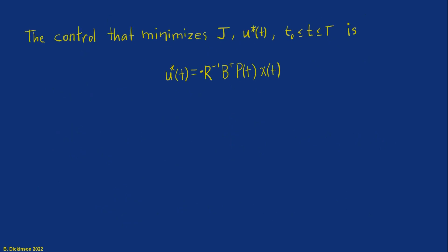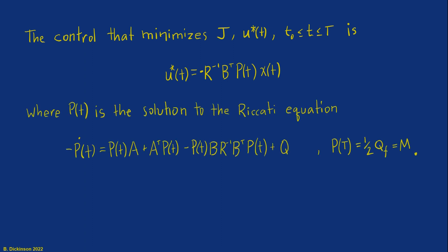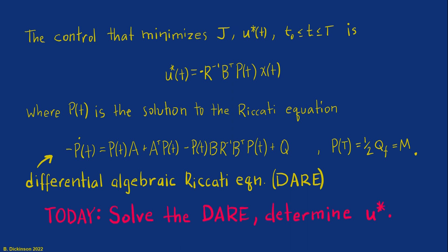In section 2, we discussed that the control that minimized the performance index was the following formula, where the matrix P of t is the solution to a differential algebraic Riccati equation. The topic for today is to solve this DARE and determine the optimal control.